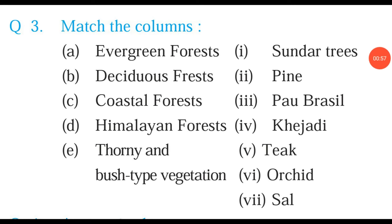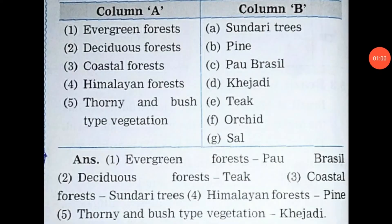This is question number 3 — Match the column. This is the answer. First, Pau Brazil. Second, Teak. Third, Sundari trees. Fourth, Pine. Fifth, Khejari.